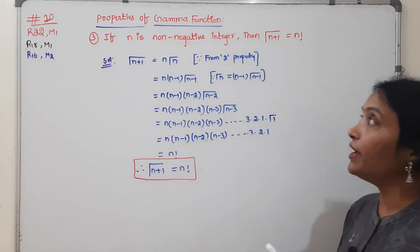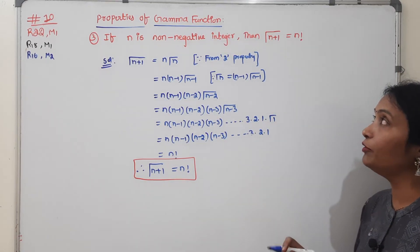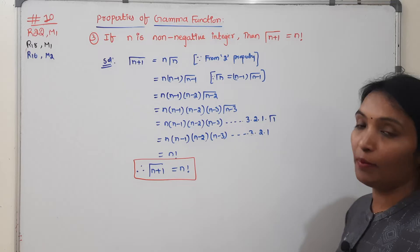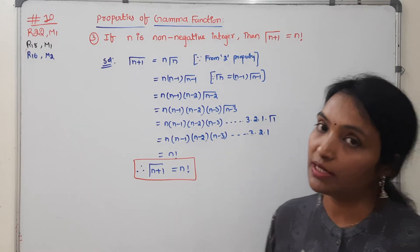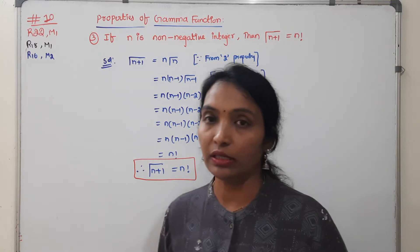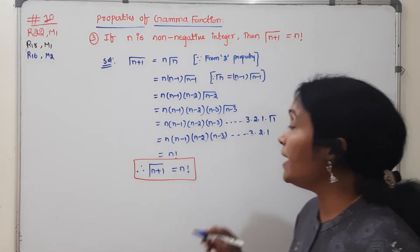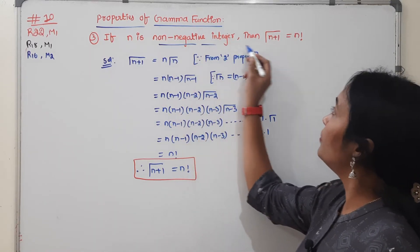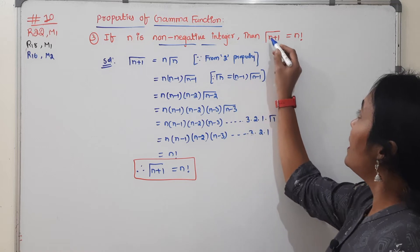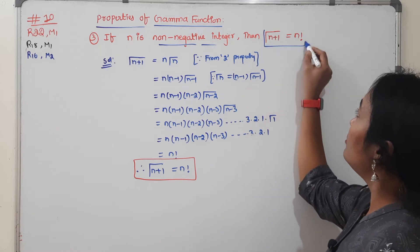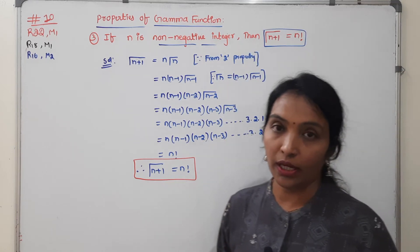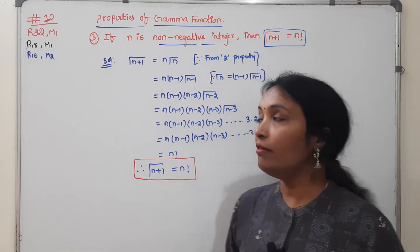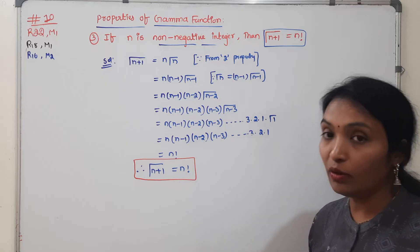If n is a non-negative integer, then Gamma of (n+1) equals n factorial. So if n is a non-negative integer, the value of Gamma(n+1) is n factorial.